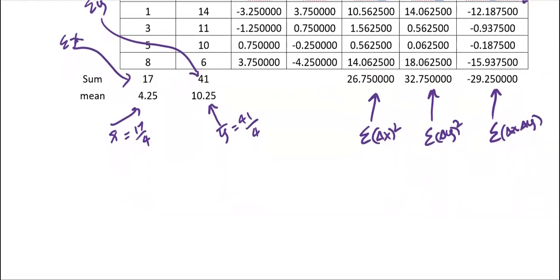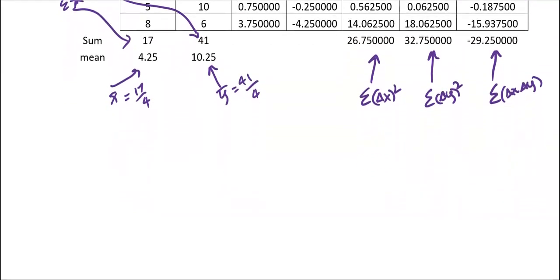Then we put all the numbers in the formula to find m, b, and r. For m, with the formula summation of delta x delta y divided by the summation of the square of delta x, we use the number negative 29.2500 divided by the summation of delta x squared, which is 26.75000, and the number comes up to be negative 1.09.